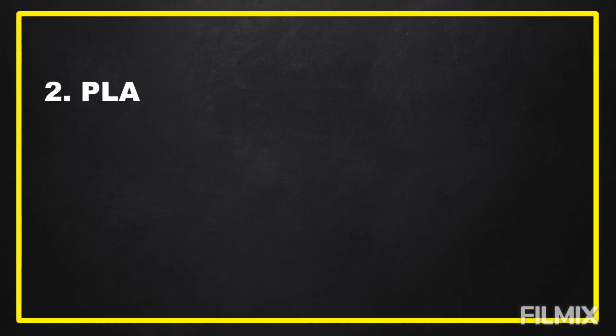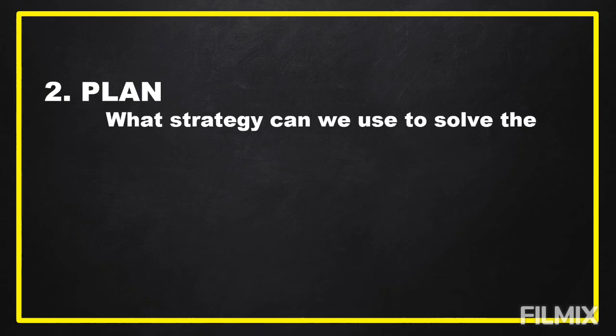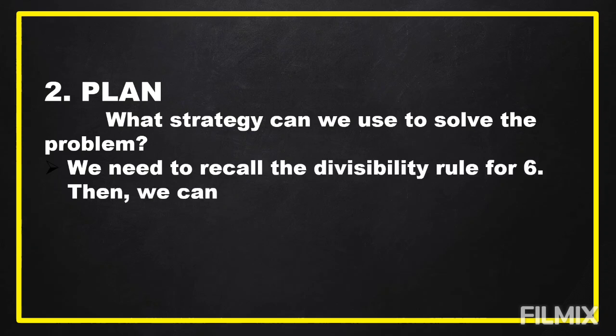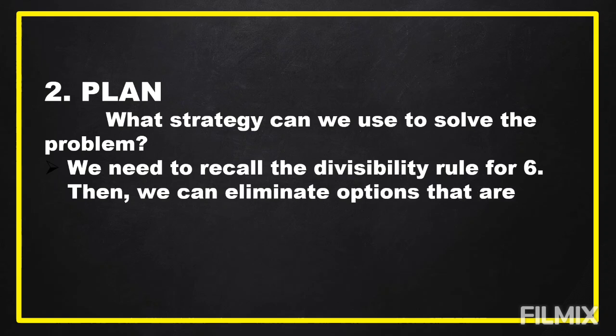After we understand the problem and know what is asked and the given facts, the next step is we're going to plan. Under planning, we should know what strategy or operation we can use to solve the problem. In our problem for today, we need to recall the divisibility rule for 6, then we can eliminate options that are not divisible by 6.